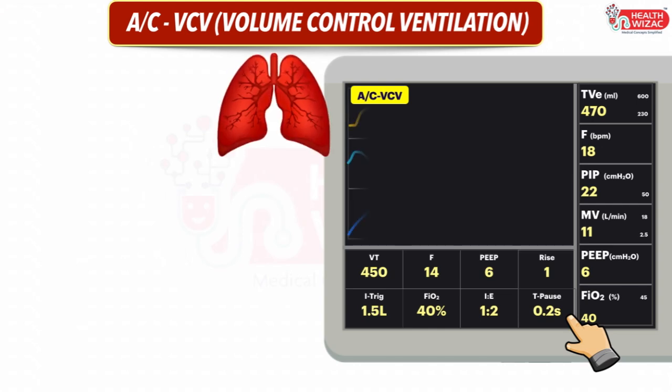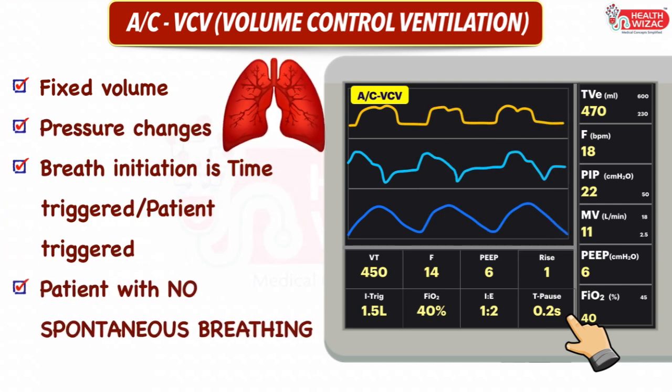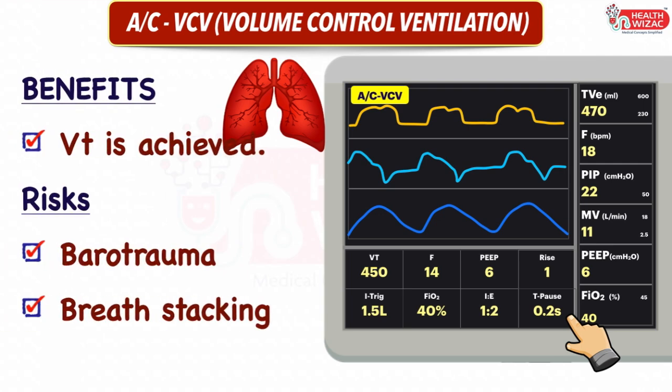In Volume Control Ventilation, the volume of air delivered per breath is fixed. Pressure changes as per flow trigger or inspiratory time and lung condition. Breath initiation is time-triggered in control mode and patient-triggered in assist mode. It should be used when the patient has no spontaneous breathing, or the patient should be sedated and paralyzed. Advantages include delivery of desired tidal volume, whereas disadvantages include barotrauma — as pressure may increase if resistance increases and lung compliance decreases — and breath stacking.